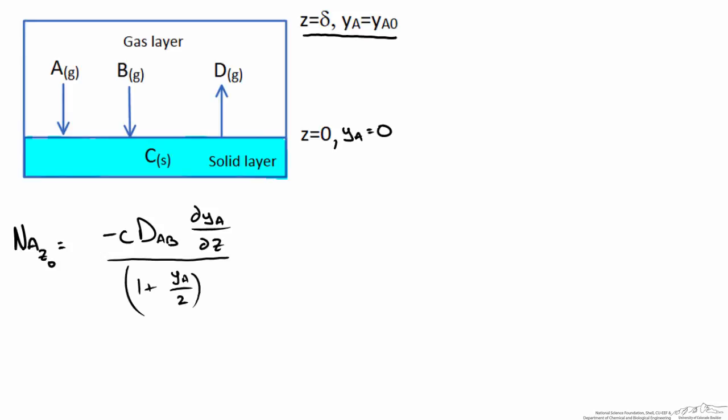We are going to separate our variables and write this as NAz naught dz. Evaluate this from z equals 0 to z equals delta and set this equal to negative c DAB since these are constants times the integral from 0 to yA naught. This is going to be dyA over (1 + yA/2).